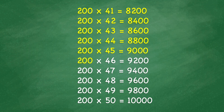200 times 46 equals 9,200. 200 times 47 equals 9,400. 200 times 48 equals 9,600. 200 times 49 equals 9,800. 200 times 50 equals 10,000.